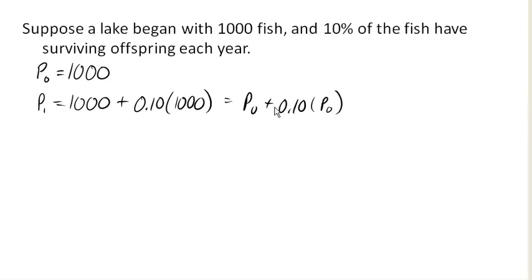I could even pull out a little bit of algebra here and factor out that P₀, which would leave me with 1 plus 0.10. Notice this is 1 times P₀. So if I factor out a P₀, I get 1 plus 0.10 times P₀, or I could just call this 1.10 times P₀. And that's going to be my population after one year.